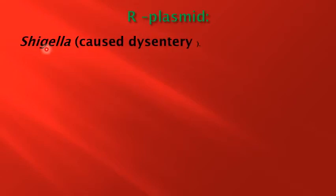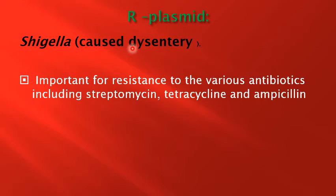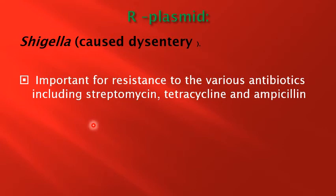The other type, called R-plasmid, is found in Shigella, which causes dysentery. It has more genes and can insert itself at random locations in the bacterial chromosome. These genes are not essential to bacterial growth but are important for resistance to various antibiotics, including streptomycin, tetracycline, and ampicillin.